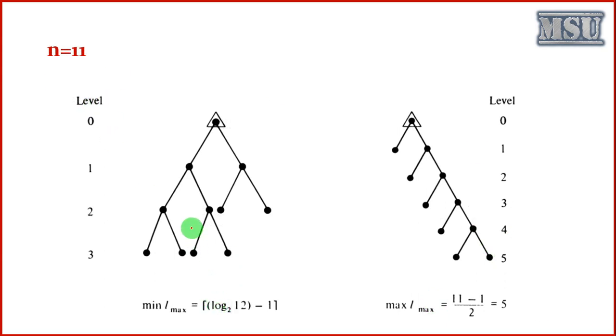To represent this 11 vertices binary tree, we require at least 3 levels, minimum at least 3 levels needed. Log 2 of 12, which must be something around 3 point something, so it will be converted into 4, 3 point something minus 1, so we will get the value as 2 point something. So it is a ceiling function, so we will get the degree value as 3.